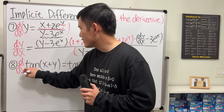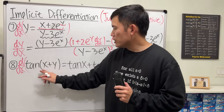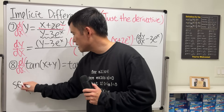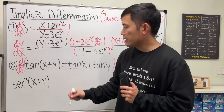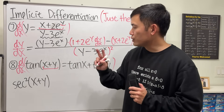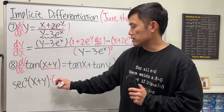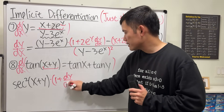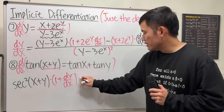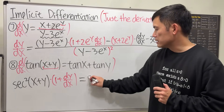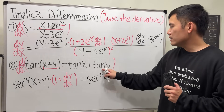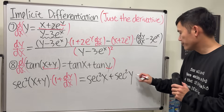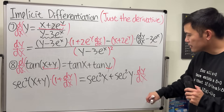Number 8. The derivative of tangent of x plus y — the derivative of tangent is secant squared. So start with secant squared, the input stays the same. Now use the chain rule: notice we have two terms, so multiply. The derivative of x with respect to x is 1, and the derivative of y with respect to x is dy/dx. That equals on the right-hand side: derivative of tangent x is secant squared x, and then the derivative of tangent y gives secant squared y. But y is a function of x, so multiply by dy/dx.